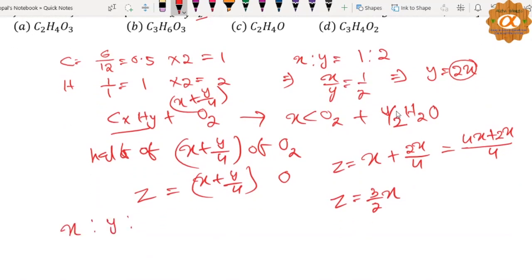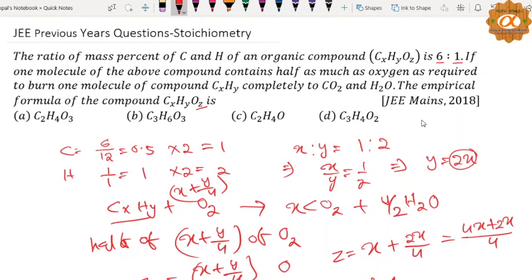X is to Y is to Z is equal to X, Y की जगह 2X, और Z की जगह 3 by 2X. X cancel, इस 2 को cancel करने के लिए 2 से multiply. That means 2, 4, और 3. Ratio of carbon, hydrogen, then oxygen है, तो उनका ratio आ गया 2 is to 4 is to 3. Empirical formula option H correct, thank you.